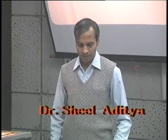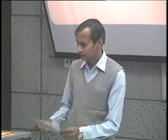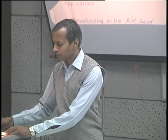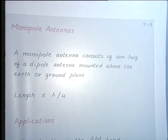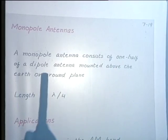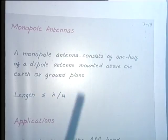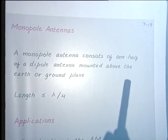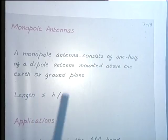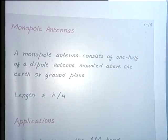You would recall that we considered short dipole antennas last time. Today we consider the corresponding monopole antennas. A monopole antenna consists of one half of a dipole antenna mounted above the earth or a conducting ground plate. That is how we define a monopole antenna.